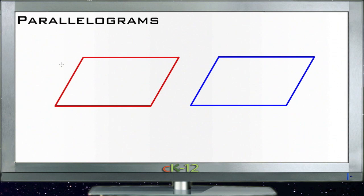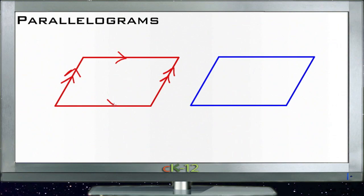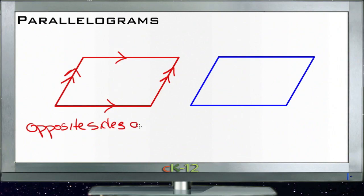The first thing we can count on is that opposite sides of a parallelogram are congruent. So this side of this parallelogram is going to be congruent with its opposite side over here, and the same on the other pair — this side of the parallelogram is congruent with this side. So opposite sides are congruent.